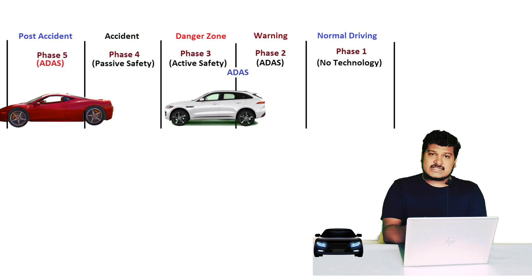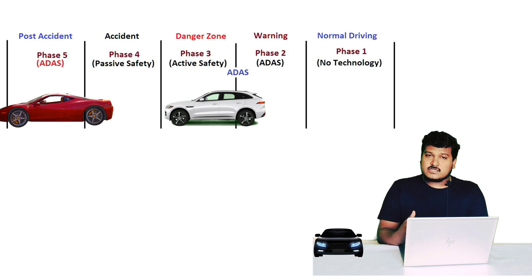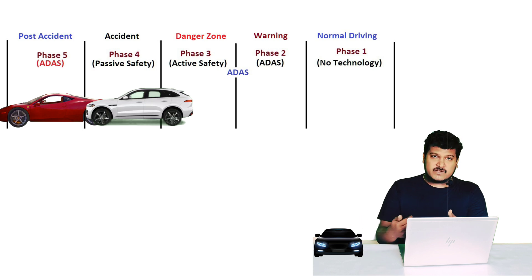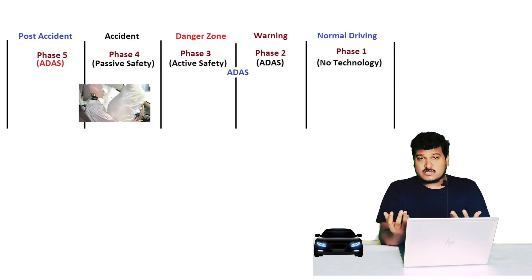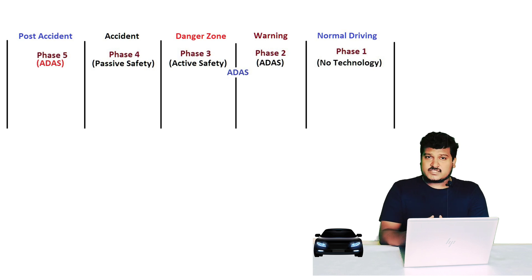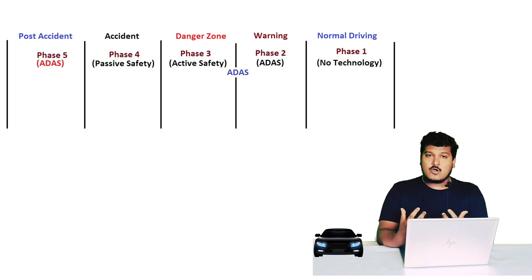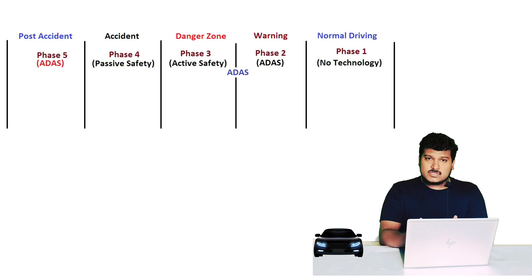In phase four, the accident happens — the ego vehicle and the obstacle vehicle collide. Immediately after the accident, the airbags start to open and the seat belt becomes tightened. These rely on Passive Safety. Passive Safety is the safety that happens at the time of or after the accident to minimize or reduce the impact. Two examples of passive safety are the seat belt and the airbag. So in phase four, passive safety works.